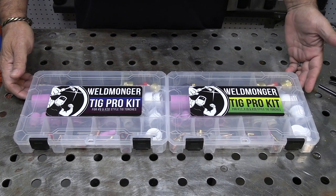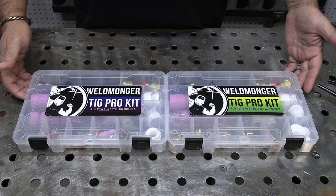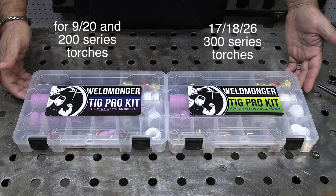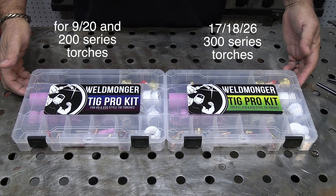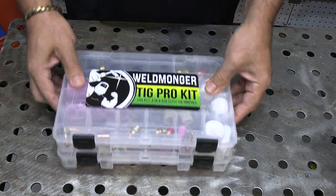I'd like to take a minute today and talk about these two new TIG Pro kits that I have added to my store. There's a kit for 9 and 20 style torches and also a kit for 17, 18, 26 style torches.